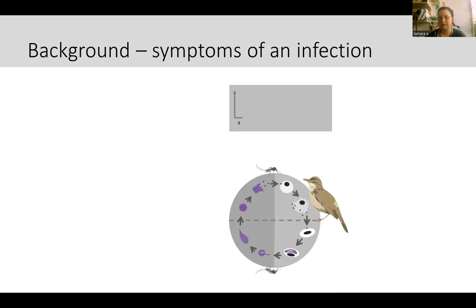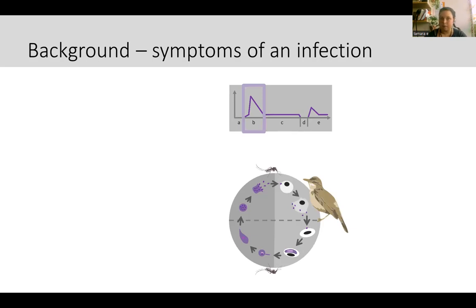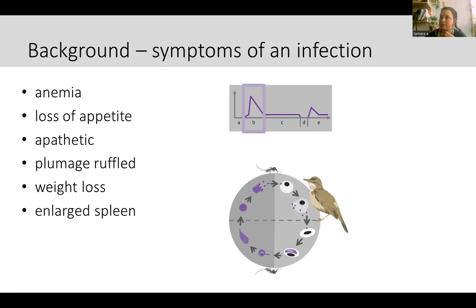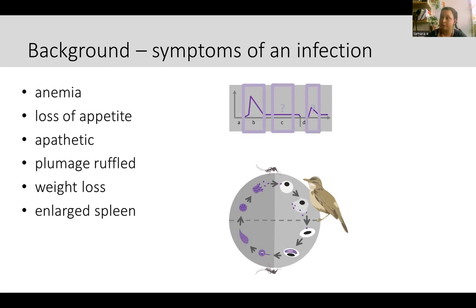The symptoms birds have really depends on the stage of infection. After transmission there is a primary infection where infection intensity increases, followed by a potentially long chronic phase. Parasites can also disappear or reappear in a so-called relapse. Symptoms known from experimental studies include anemia, loss of appetite, reduced mobility, ruffled plumage, weight loss, and enlarged spleens — mostly from the primary infection stage. Not much is known about symptoms during the chronic phase or during relapse.